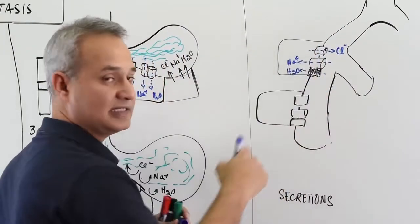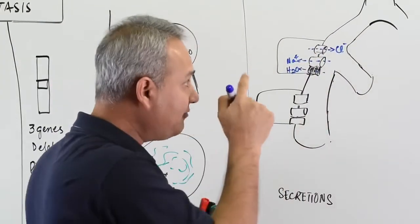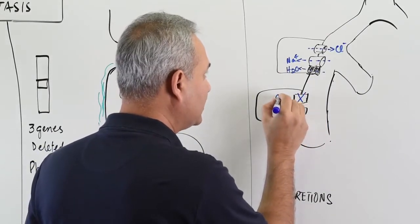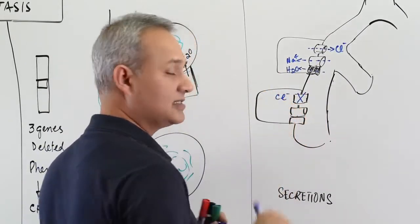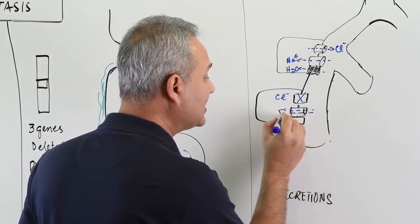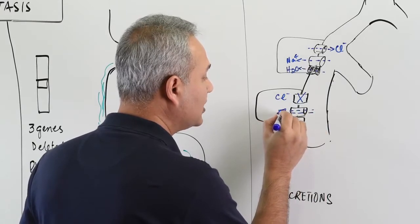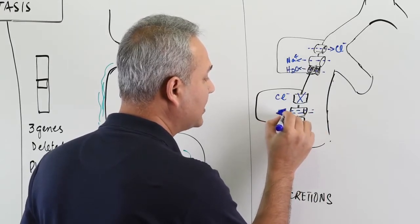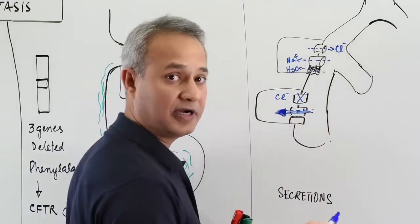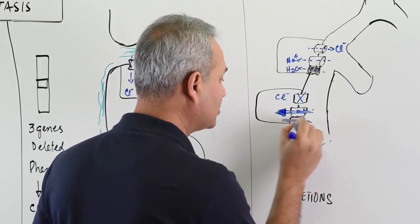When this complex is abnormal, then the behavior is different. One, chloride channel is not working, so chloride becomes trapped inside the cell. Second, sodium channel working becomes increased. Sodium channel becomes hyperactive as a result of the mutation. And if sodium becomes hyperactive, that will mean more water will also come in.